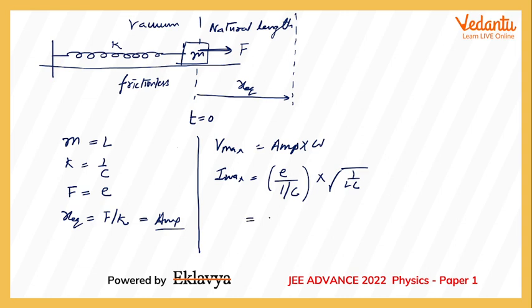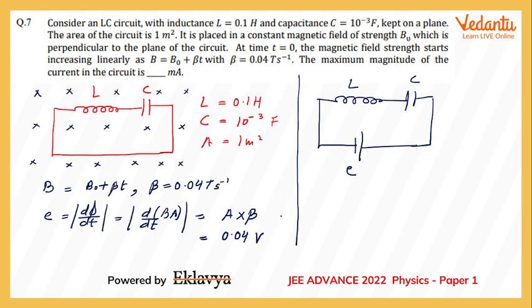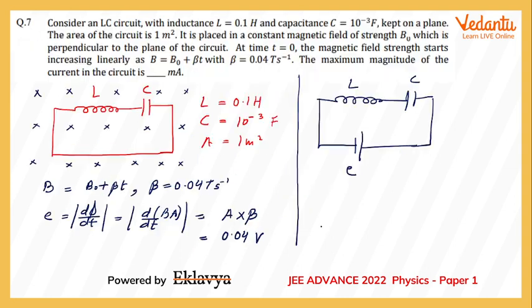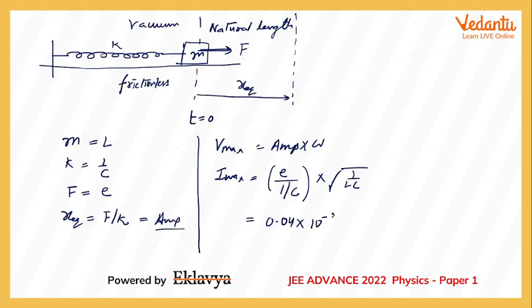Now we substitute the numerical values. E was calculated to be 0.04, so 0.04, C was given to be 10 raised to power minus 3, and then root of 1 upon L which is 0.1 into 10 raised to power minus 3. So when we finish this calculation, we get 0.004 amperes which is 4 milliamperes. So the answer to this question would be 4.